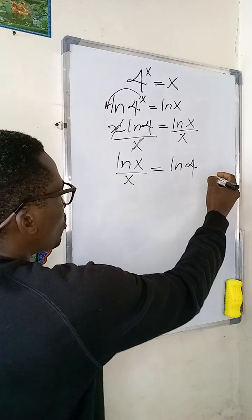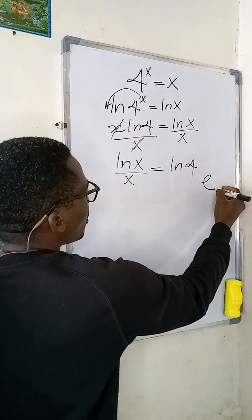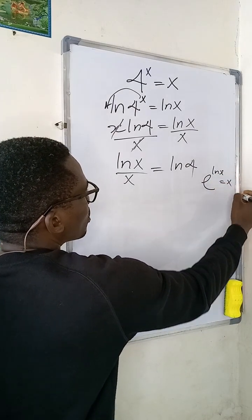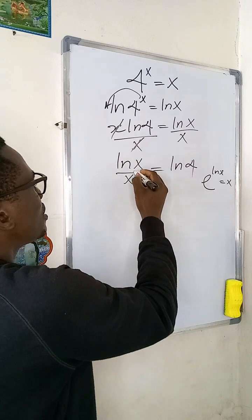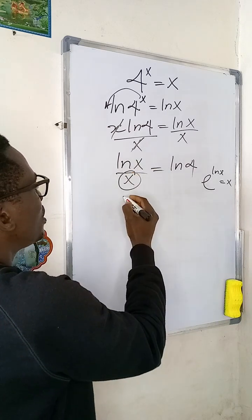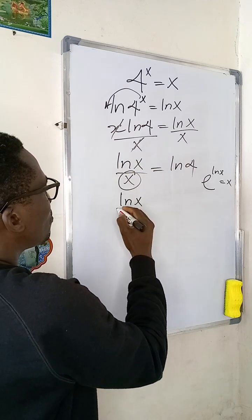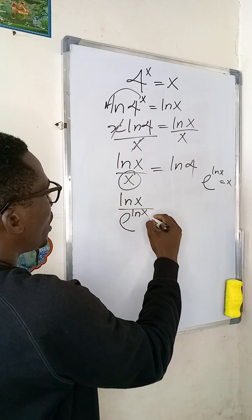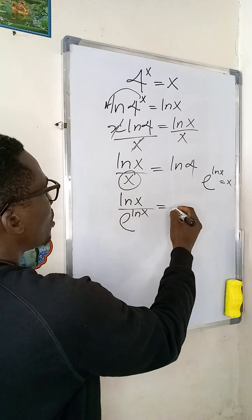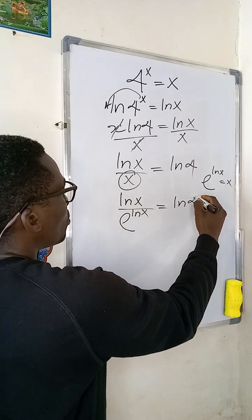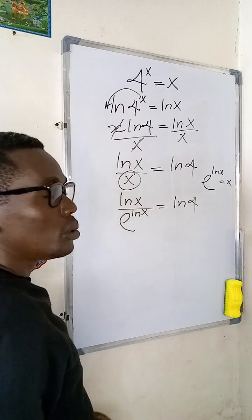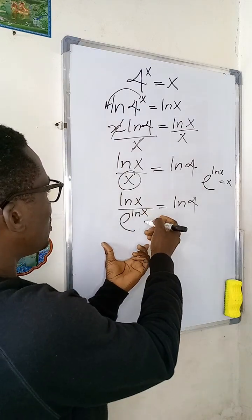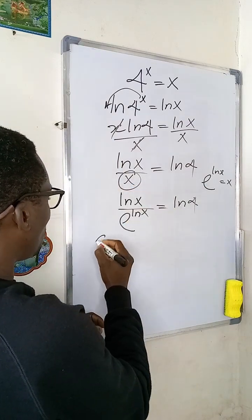Remember one key law: e^(ln x) equals x. So I can replace x in the denominator with e^(ln x), giving me ln(x) divided by e^(ln x) equal to ln(4).